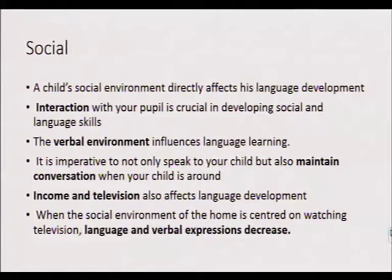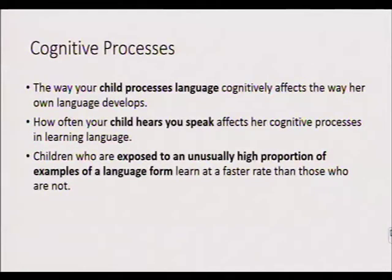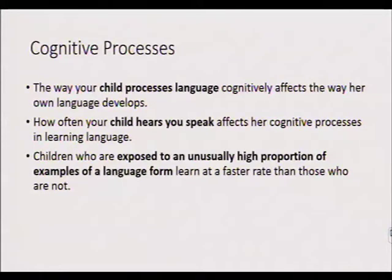Then we have cognitive processing — this is the way a child processes language. It depends on how often your child hears language. If they don't have any language input, they will have nothing to process in their minds. Children who are exposed to a high proportion of examples of language form learn at a faster rate than those who are not. If they hear language daily and people ask them to also respond, that helps them learn the language faster.